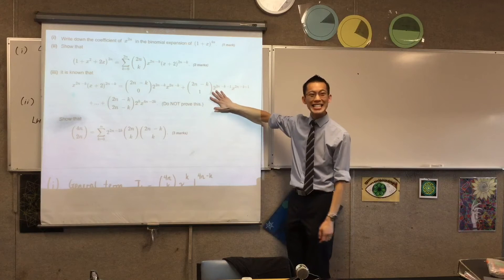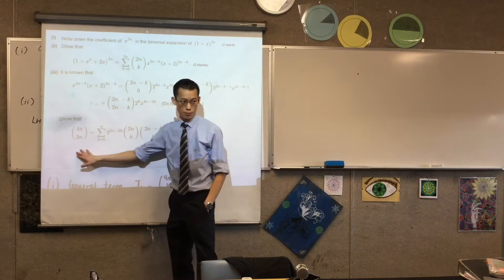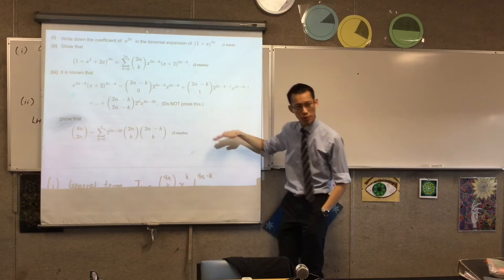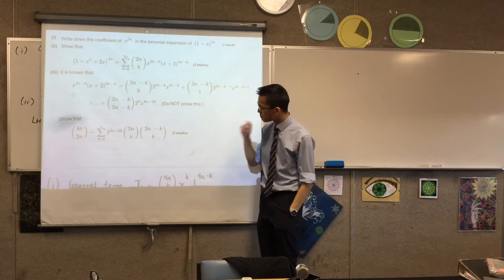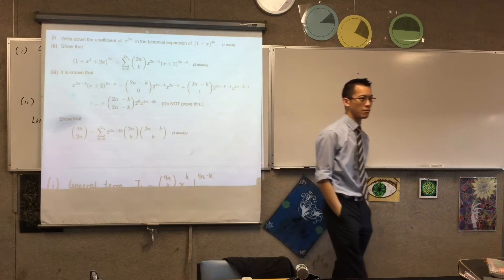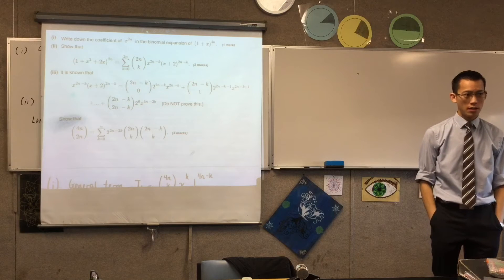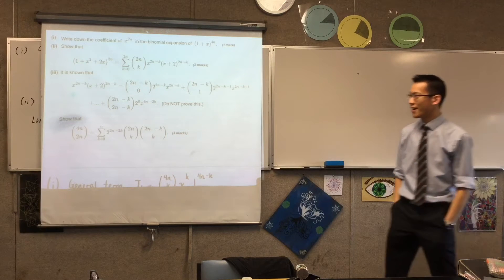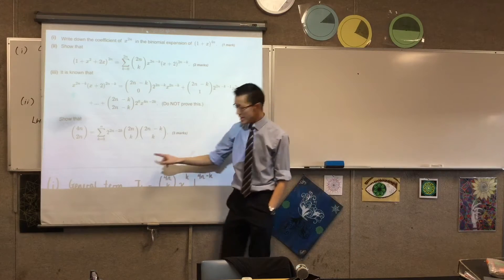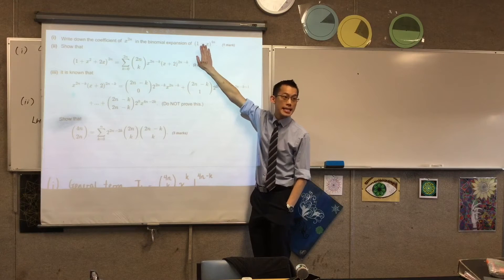So they give you this identity, and then they say, here's what I want you to prove. Put the identity to one side for a second, I don't understand it yet, let's look at where we're headed. 4nc2n - that was the answer to part one, wasn't it? In other words, it's the coefficient of x to the 2n in this thing.